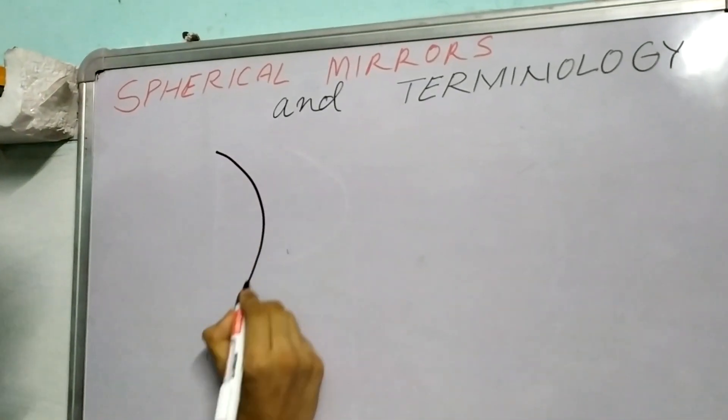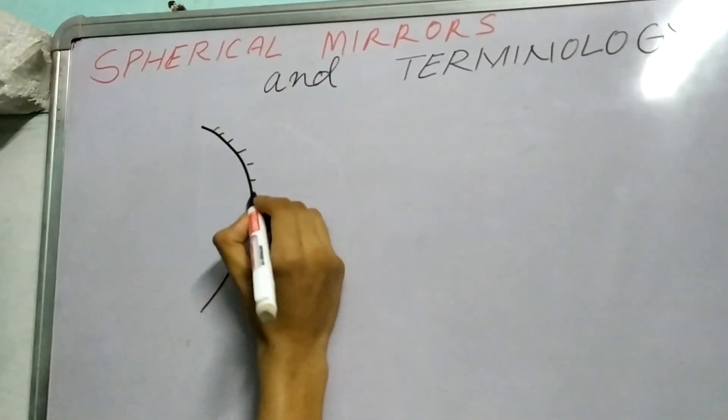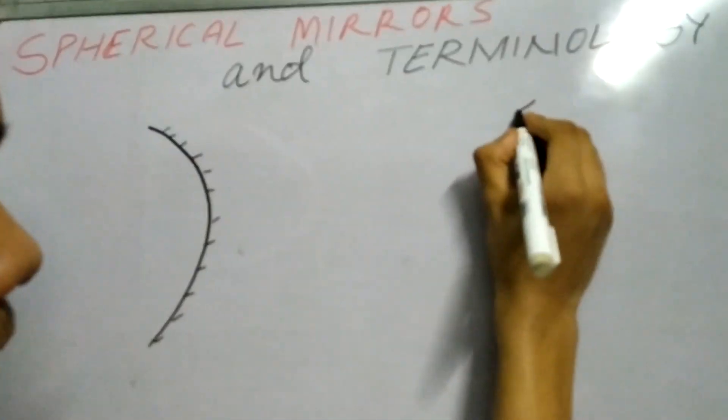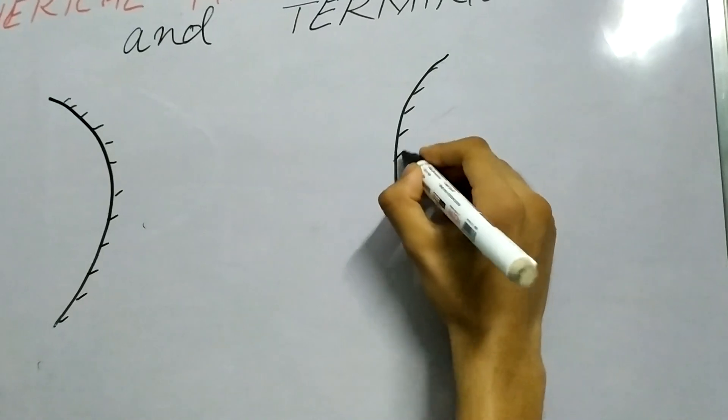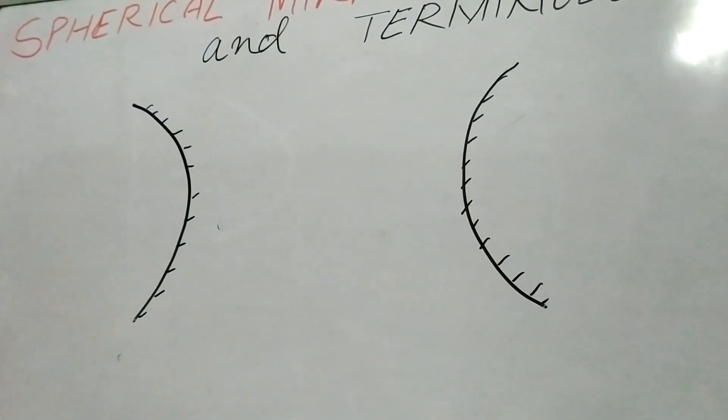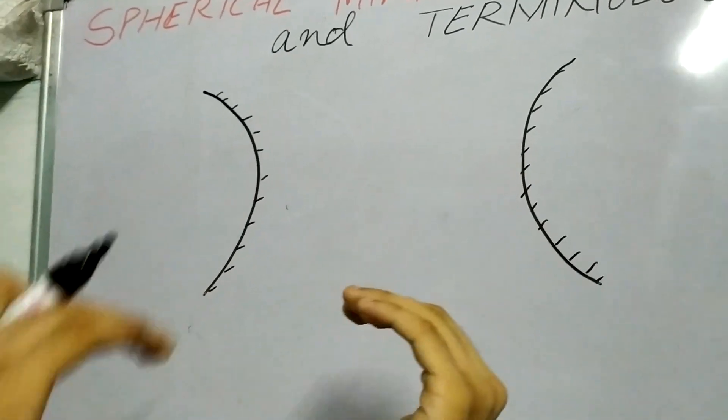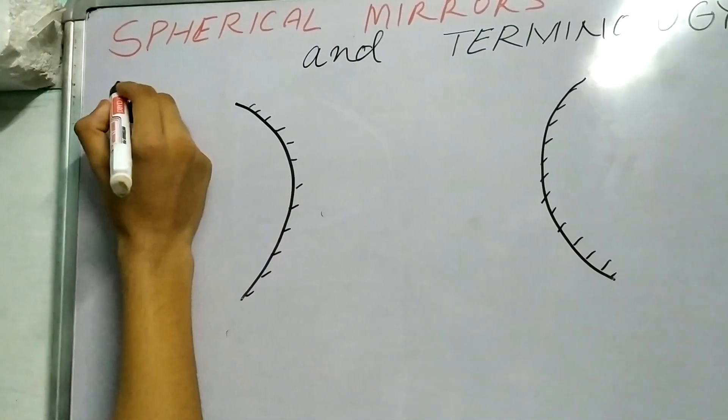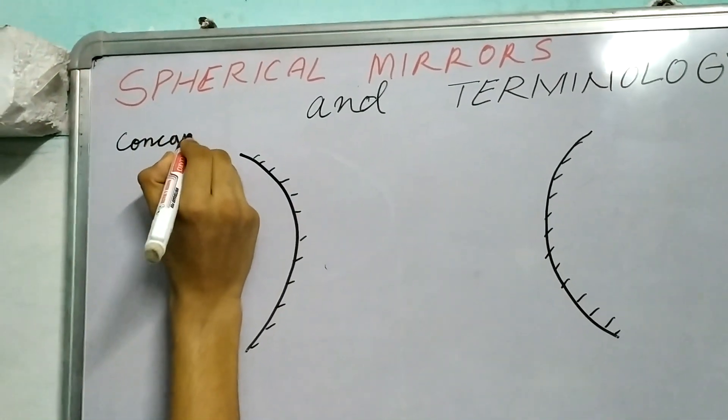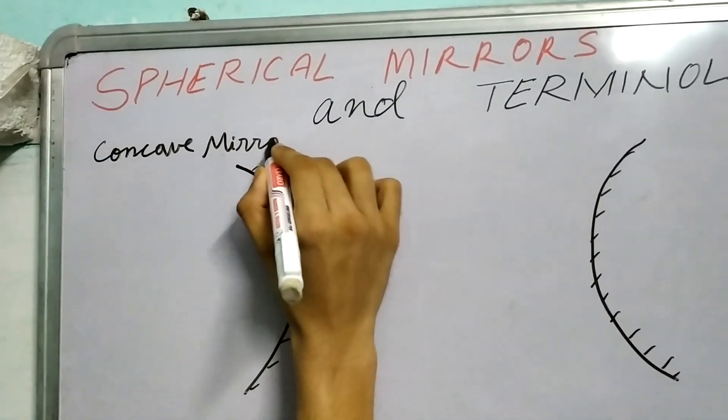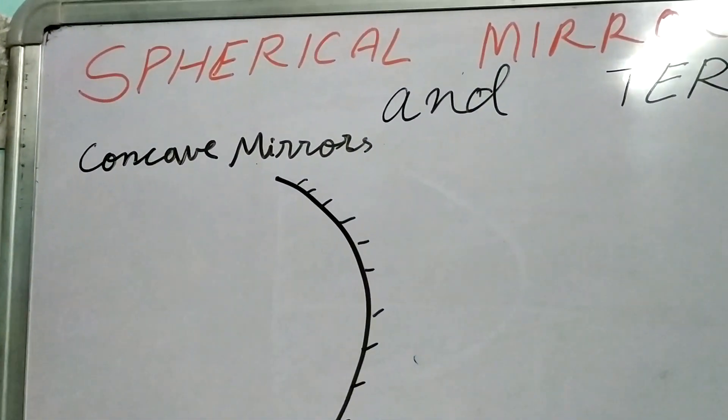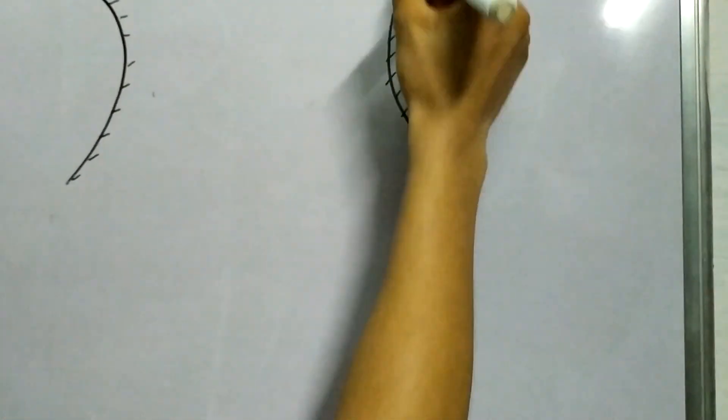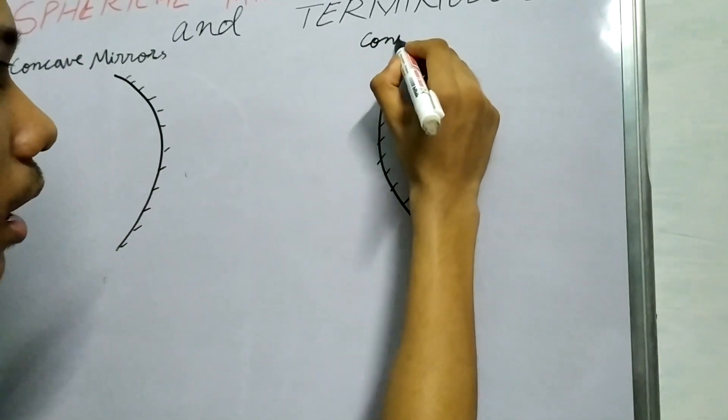So, if we draw a mirror like this and we polish the outer surface and we polish the inner surface. Now, this looks like a cave, something going away from it. This is called a cave and these mirrors are called concave mirrors. Just a name. So, again, this one. It looks as if it's bulging outwards. We call this a convex mirror.